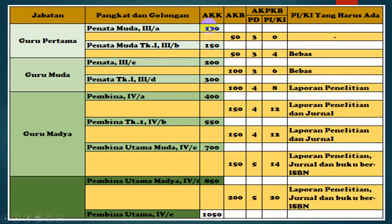Untuk naik dari 3A ke 3B, AKK yang dibutuhkan adalah 150, sehingga dibutuhkan 50 angka kredit. Dari 50 ini harus dipenuhi 3 angka kredit dari pengembangan diri (PD). Publikasi ilmiah dan karya inovasi belum diperlukan, masih 0. Jadi bila ada guru 3A mau naik ke 3B, maka harus mengumpulkan pengembangan diri sebanyak 3 AK.